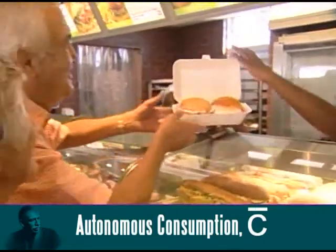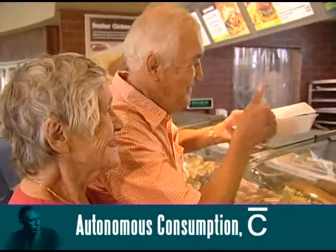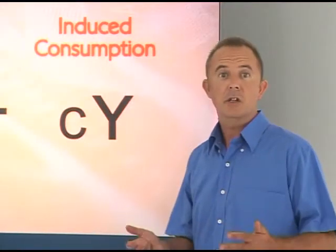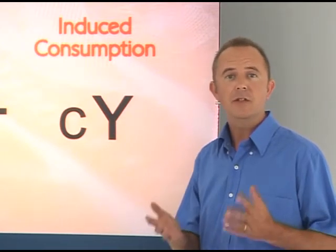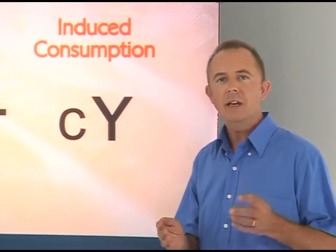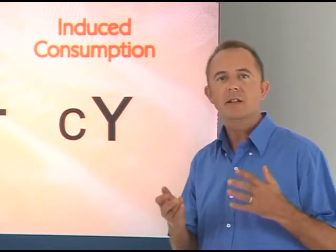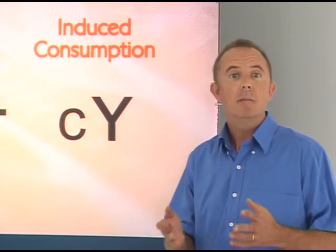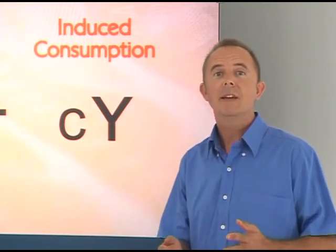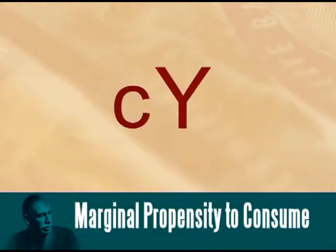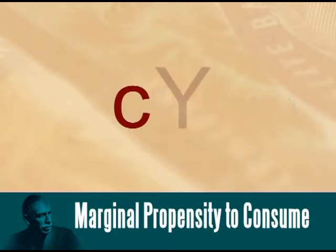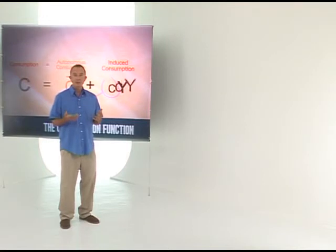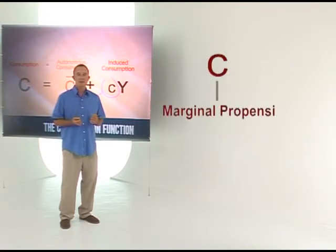In our equation, autonomous consumption is indicated by C bar. Induced consumption is that part of consumption that does depend on income. An increase in income, Y, causes an increase in consumption spending, C, but the increase in consumption spending is less than the rise in income. This pattern — to increase our consumption spending by less than any rise in income — is shown by the letter small c, and we call this our marginal propensity to consume.